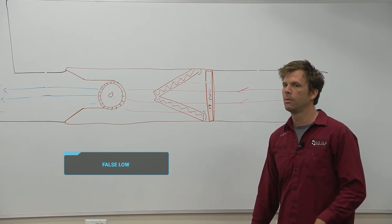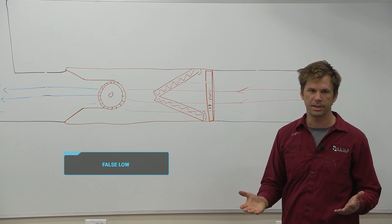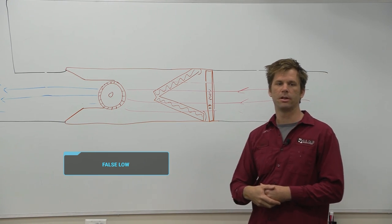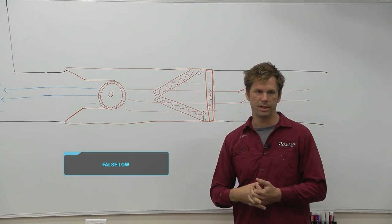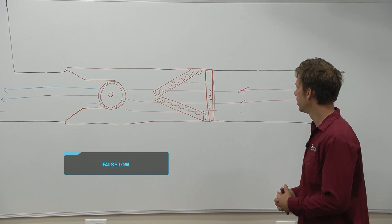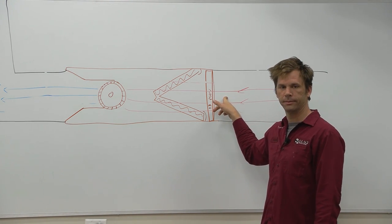If you take your probes and you measure here and here and you have a restricted filter or coil, you're actually going to have a nice really low static pressure reading. There's not going to be a lot of airflow here or here because of the restriction. There's not going to be much pressure, negative or positive, in your ductwork.